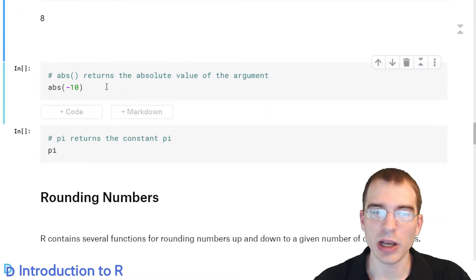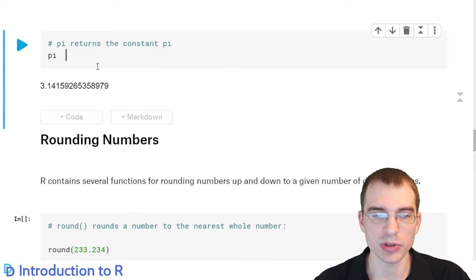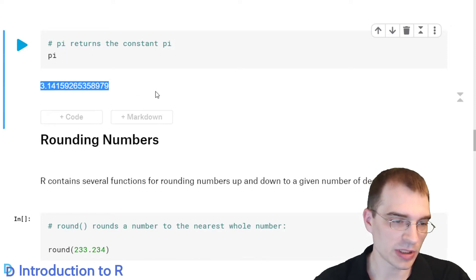The absolute value function, abs, will return the absolute value of the argument, so it'll basically just take off the negative. Putting a minus in front of a number just makes it the negative version of the number. So here, we're taking the absolute value of negative 10, so that should return positive 10. And the value pi in R just returns the constant pi. 3.14, don't know how many digits that is, but it should suffice for most purposes.